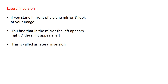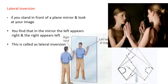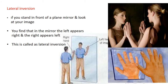One more property related to mirrors is lateral inversion. If you stand in front of a plane mirror and look at your image, you find that the left appears as the right and the right appears as the left. Your left hand appears as the right hand and the right hand appears as the left hand. This is called lateral inversion.